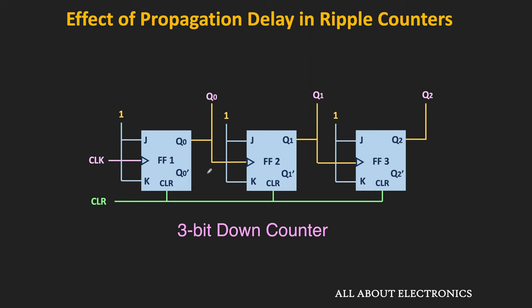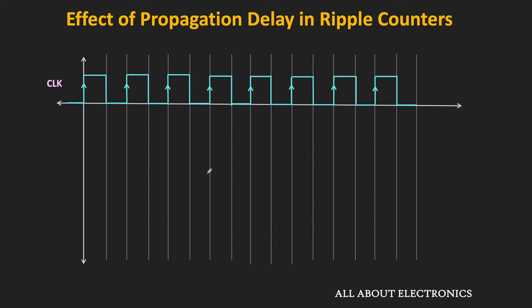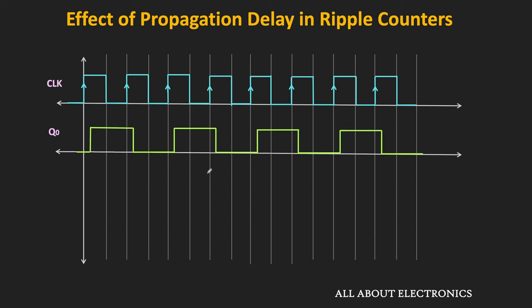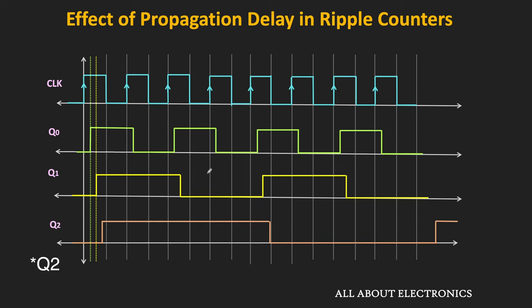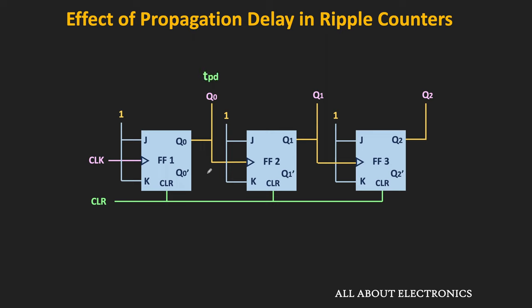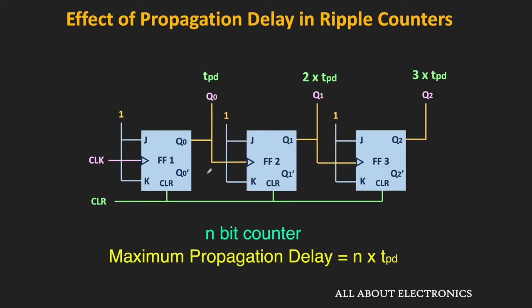Let us see this with the help of a timing diagram. The output of the first flip-flop, Q0, will respond to the rising edge of the clock after TPD. Similarly, Q1 will respond at every rising edge of Q0, but after its own propagation delay TPD, meaning with respect to the clock pulse, Q1 responds after 2 times TPD. Likewise, Q2 will be available after 3 times TPD. So for this 3-bit ripple counter, the maximum propagation delay is equal to 3 times TPD. In general, for the n-bit counter, the maximum propagation delay is equal to n times TPD.